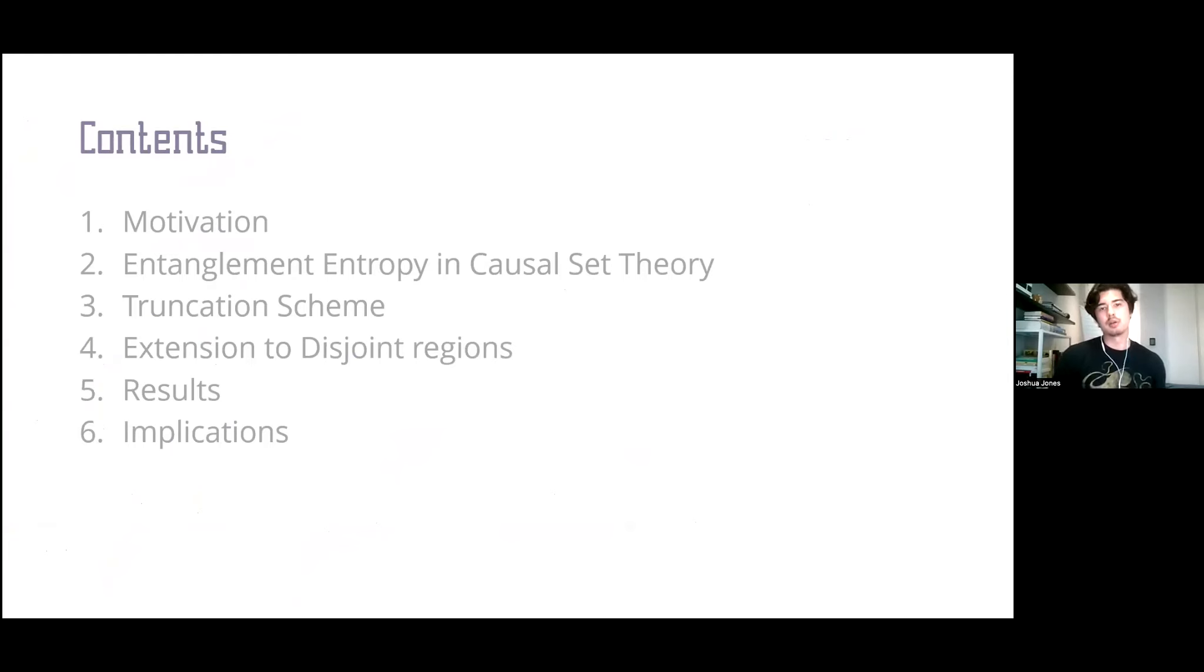I'll get into how we calculate entanglement entropy in causal set theory and how this entails a truncation scheme, which is necessary to get the area law scalings consistent with what we expect in continuum theory. I'll then talk about how we extend this to disjoint regions, present some results, and finally discuss some implications of our work.